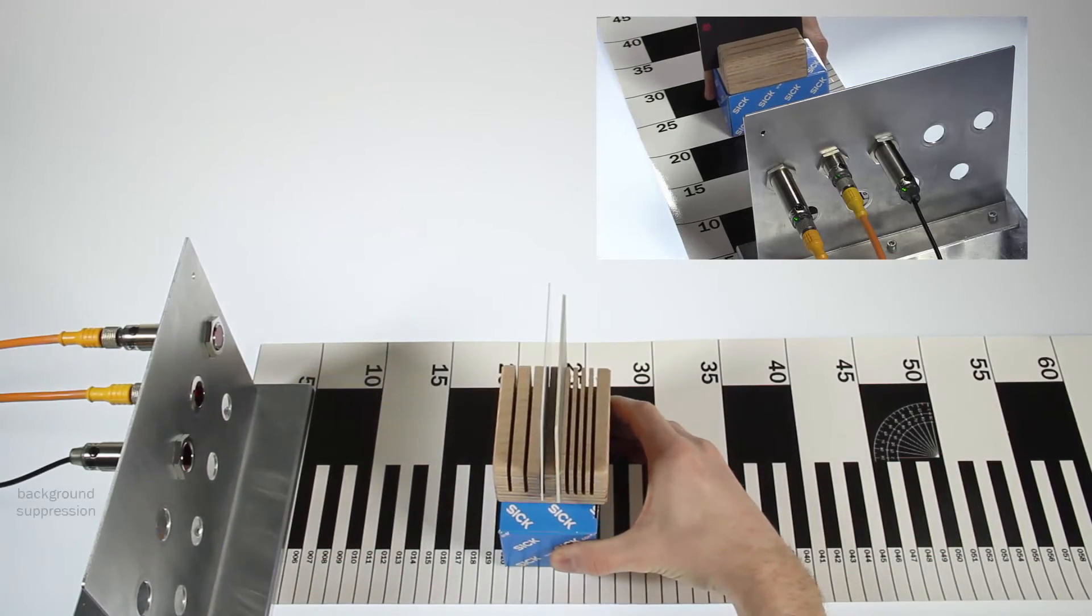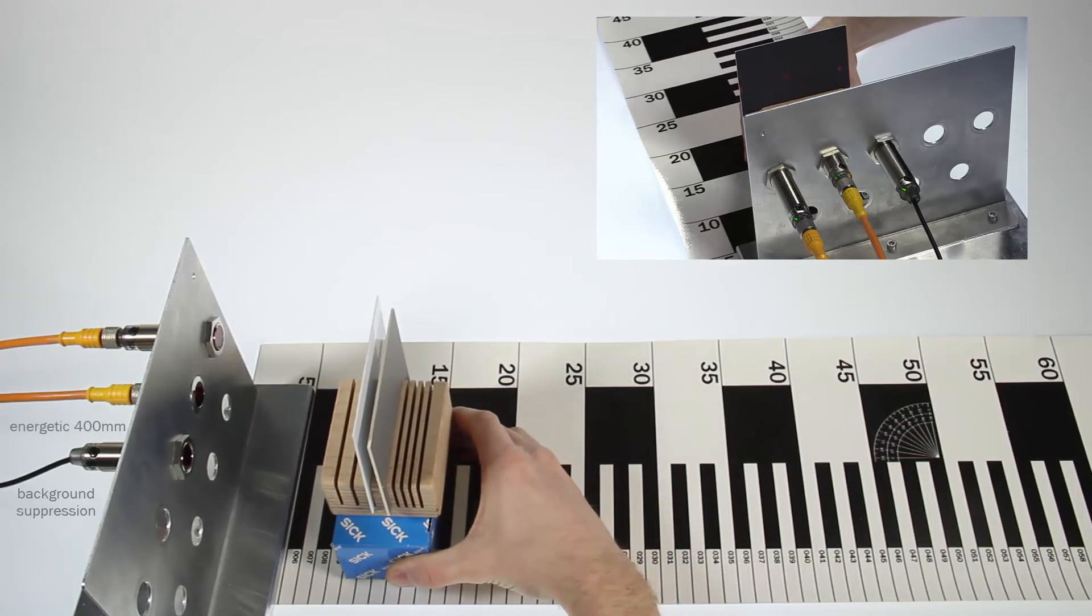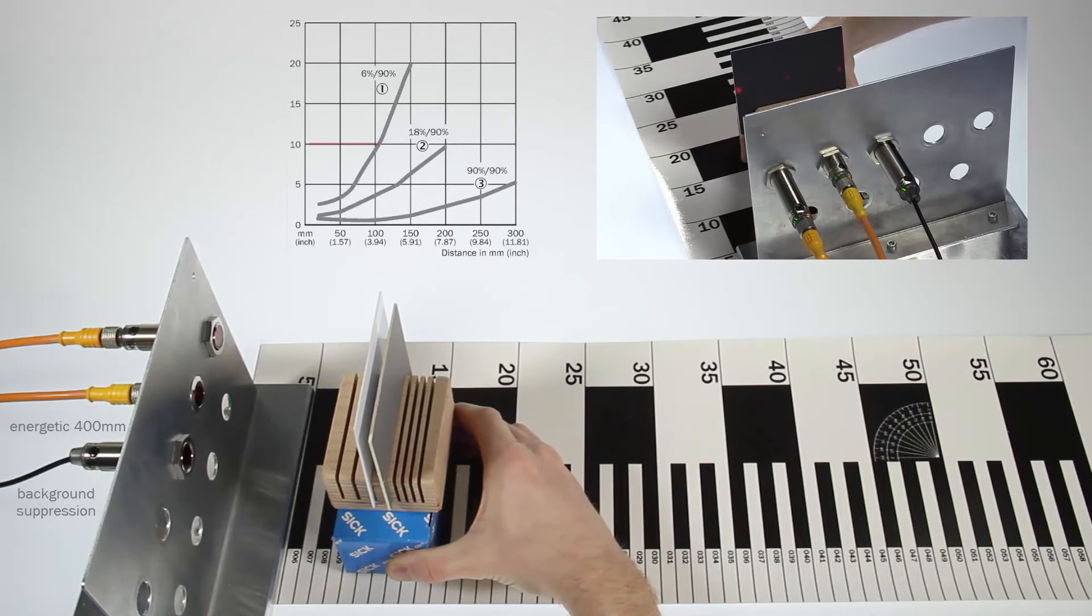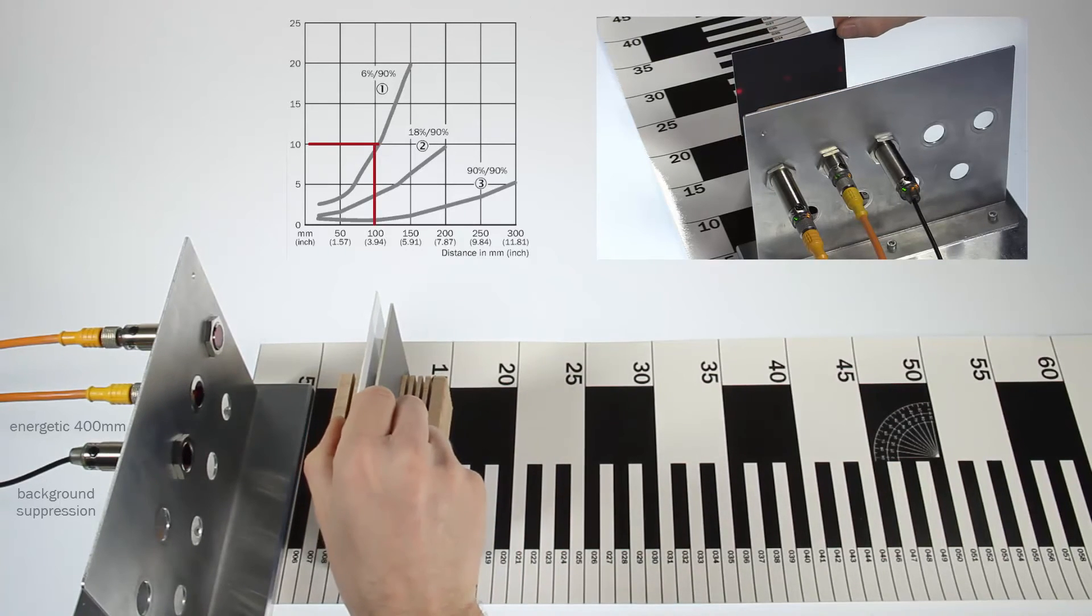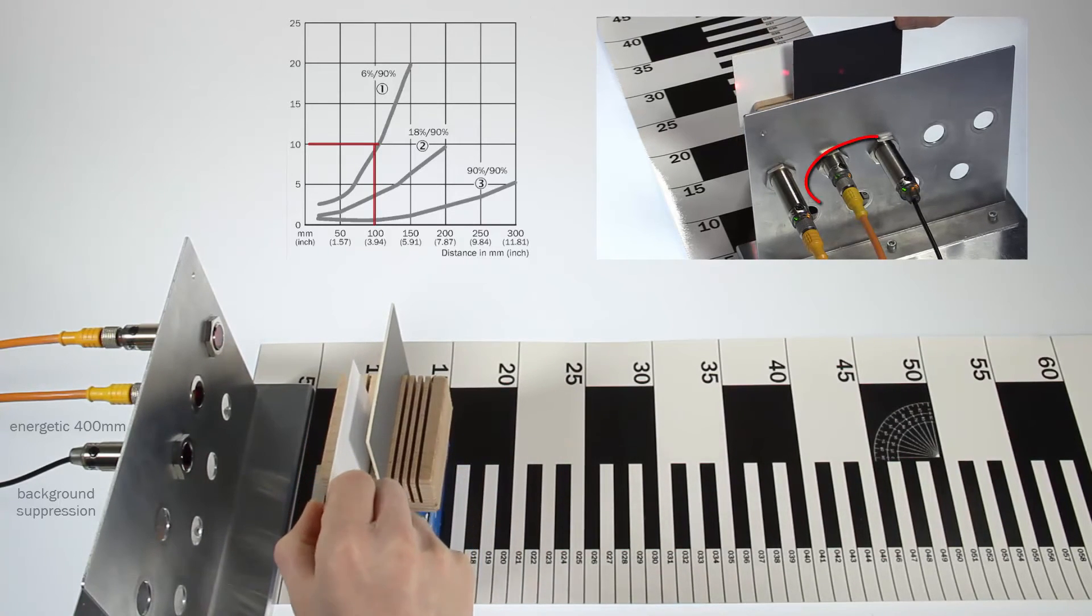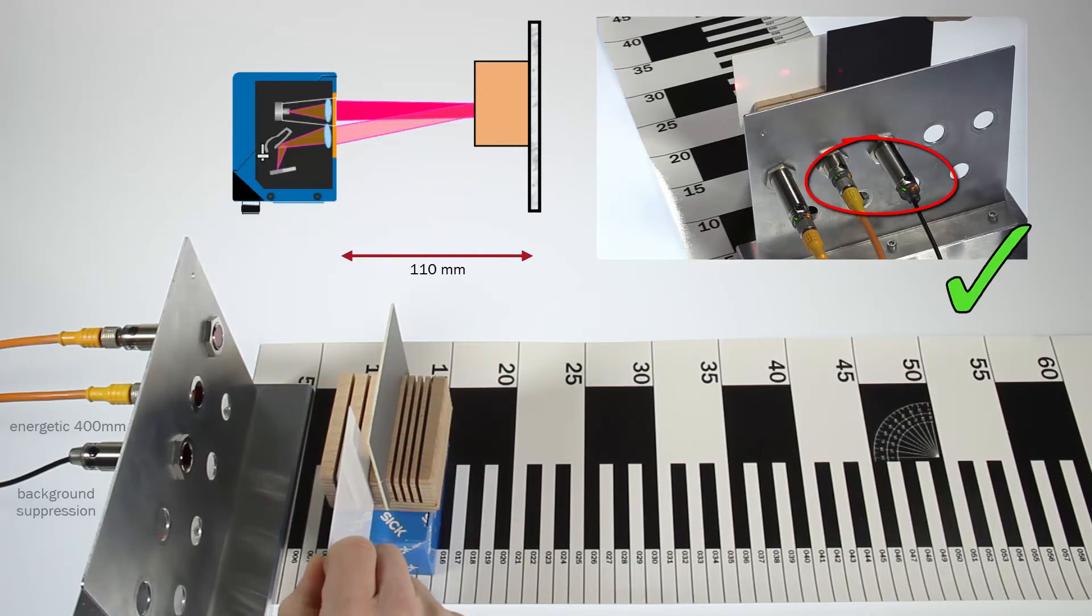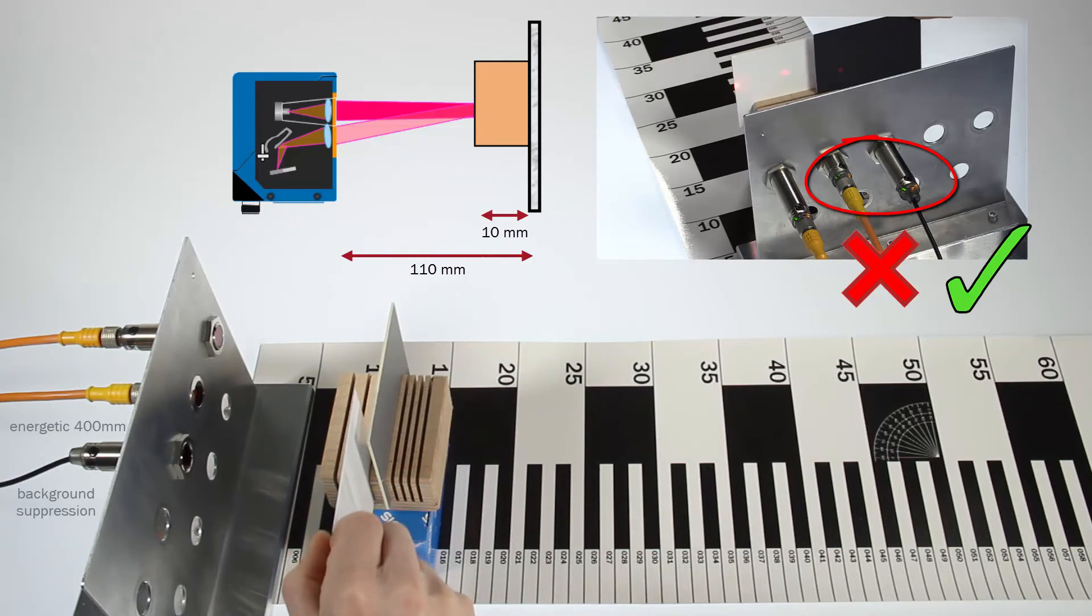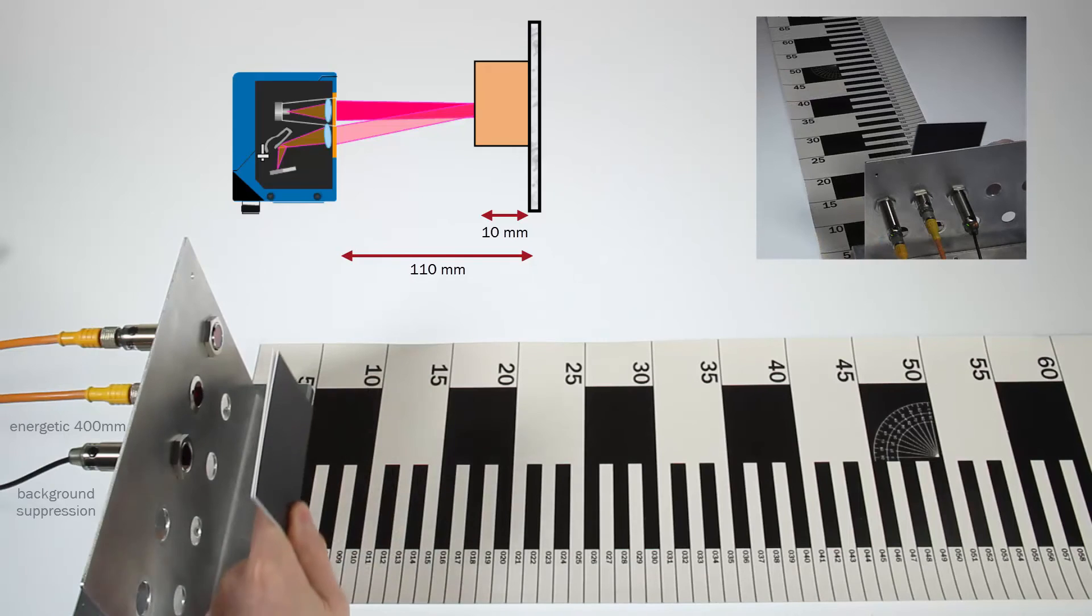Comparing the background suppression version with the 400 mm energetic version, we will have the following situation. The background suppression version is able to suppress the white background with a shift of 10% at a sensing range of 100 mm, which means the sensor is able to suppress the background after 110 mm, which is just the same as a minimum object height of 10 mm or a difference between object and background of at least 10 mm.